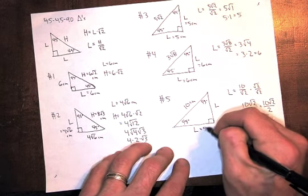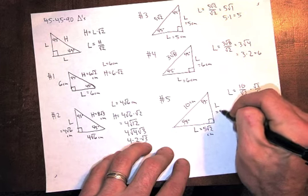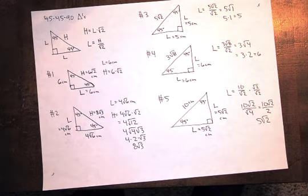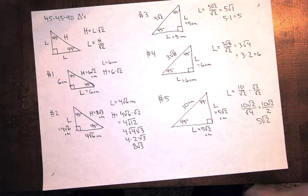Now I can divide the 10 over 2 is 5 square root of 2. So this leg is 5 square root of 2. This leg is 5 square root of 2. That one's a little trickier. On each problem, make sure you draw the triangle clearly and show your steps out to get credit.